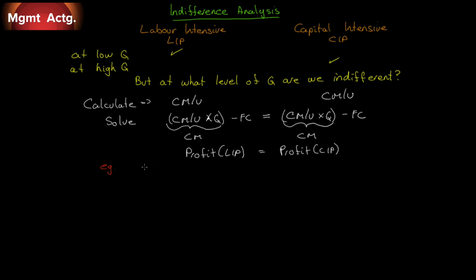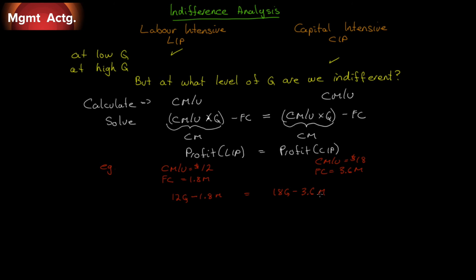For example: a contribution margin per unit of $12 under labor-intensive and $18 under capital-intensive; fixed costs of $1.8 million versus $3.6 million. We set them equal: $12Q − $1.8M = $18Q − $3.6M. Solving for Q gives $6Q = $1.8M, so Q = 300,000 units. That is our indifference point.